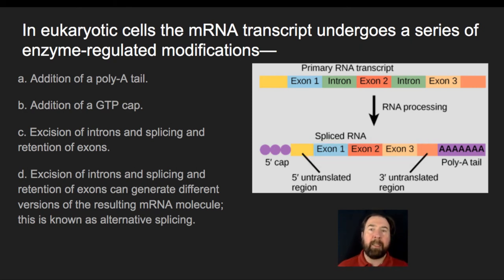And in other instances, what will happen is maybe only exon 1 and 2 would come together. That would ultimately lead to a signal to make a different size protein. And when that happens, when you have a region where you're having different types of exons that come together,